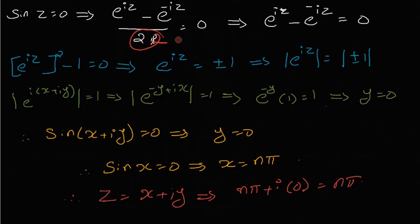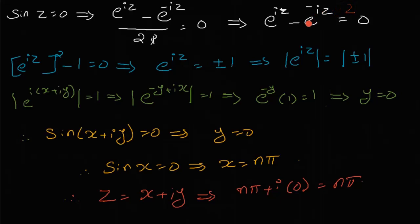Setting that equal to zero and multiplying 2i to the right side: e^(iz) minus e^(−iz) equals zero. Multiplying both sides by e^(iz): e^(iz) squared minus 1 equals zero. That gives e^(iz) squared equal to 1, so e^(iz) is equal to plus or minus 1.